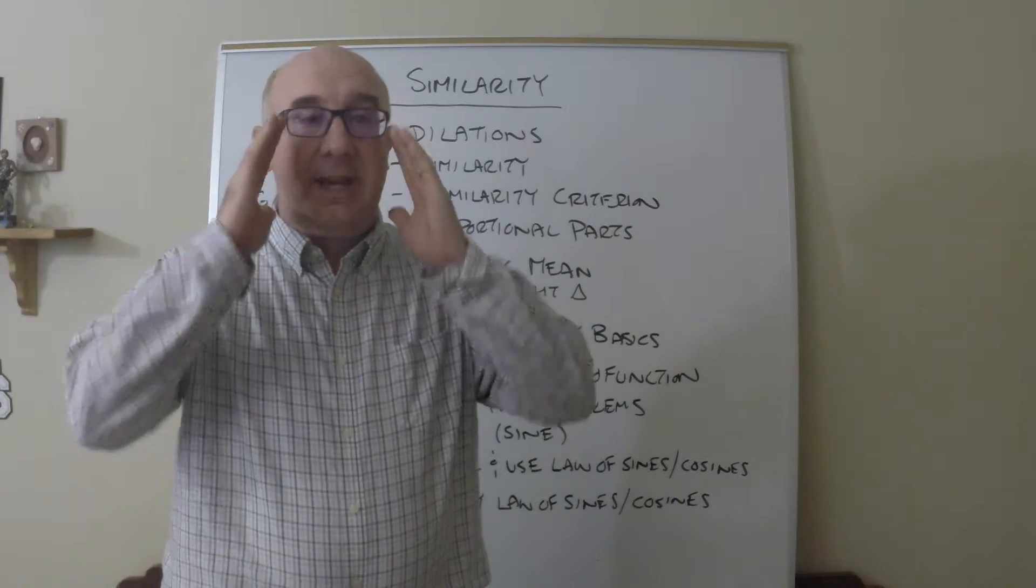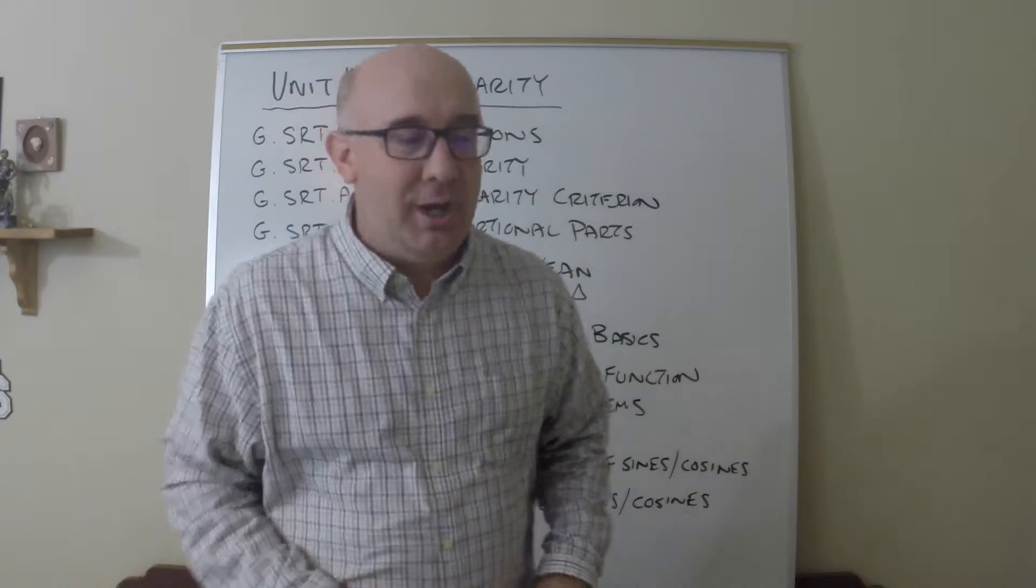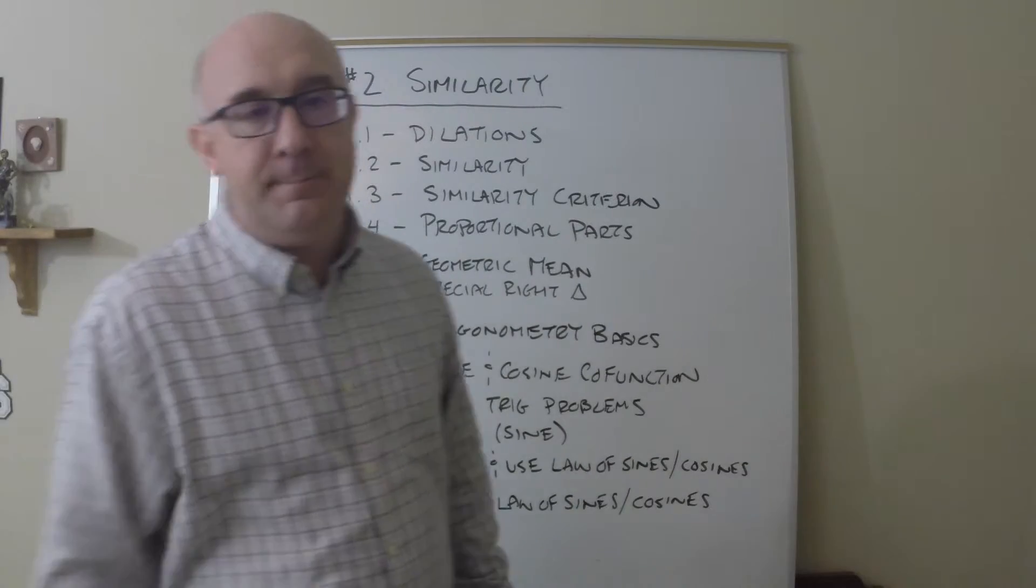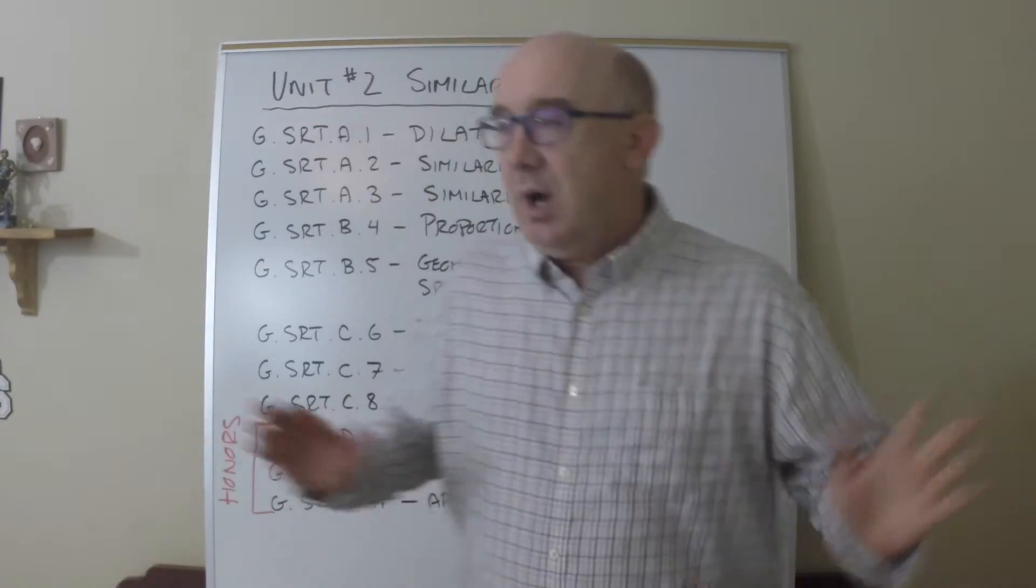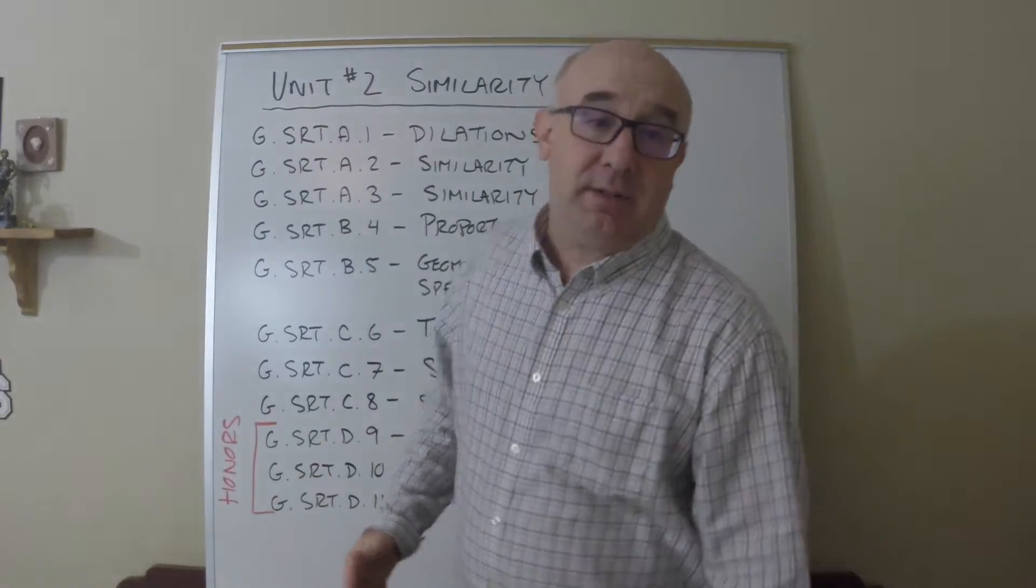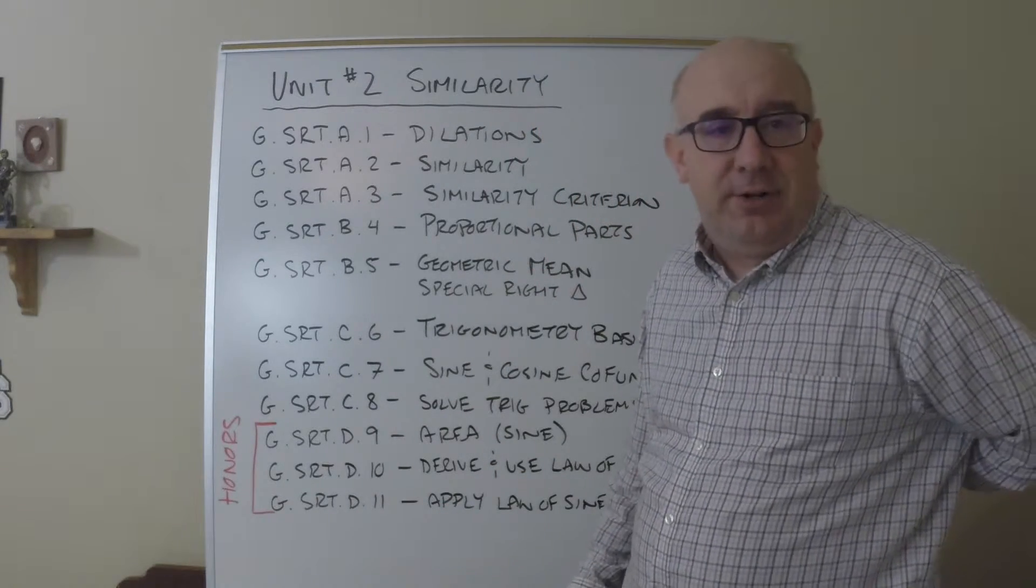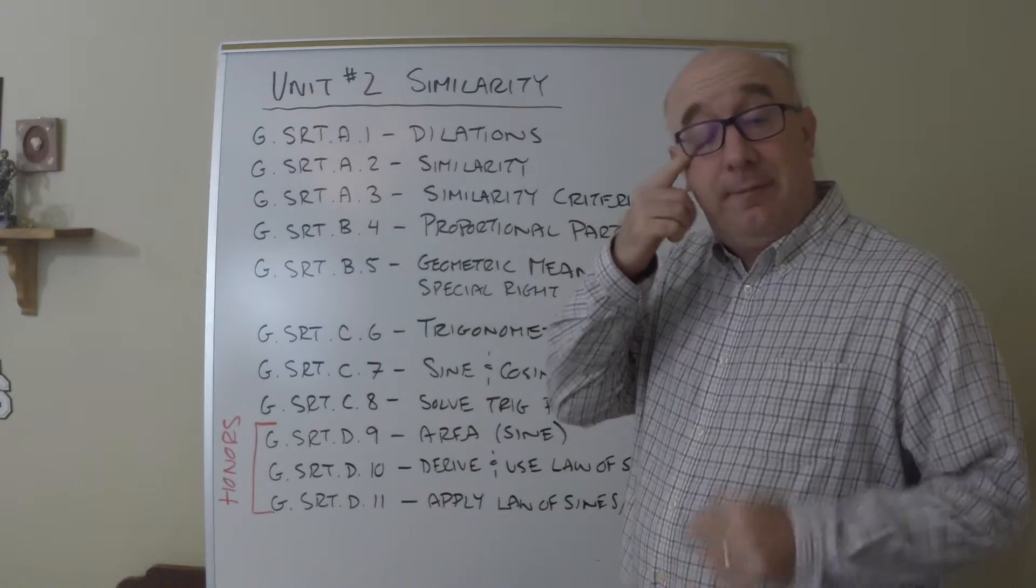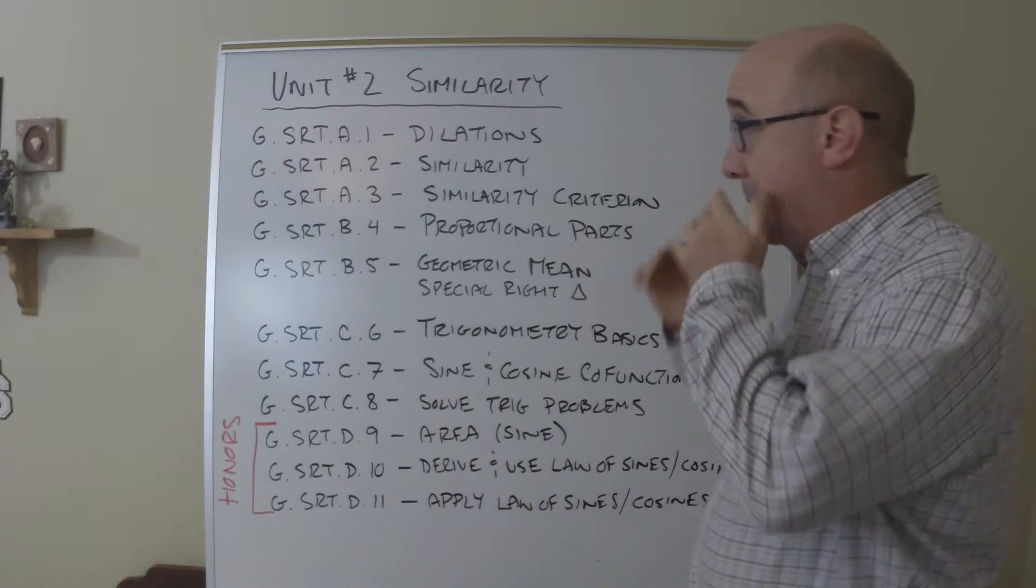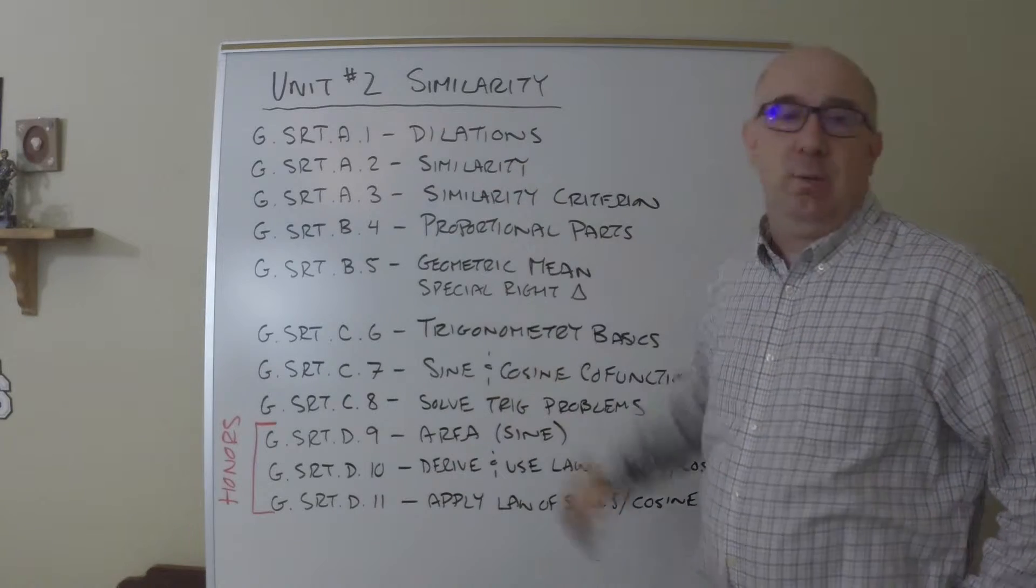I want to talk to you about the second unit of Common Core Geometry, known as similarity, and quickly walk you through the basic objectives outlined by the Common Core standards. I'll help you understand how they connect together and flow in one big picture. We begin with the non-isometric motion of dilation.